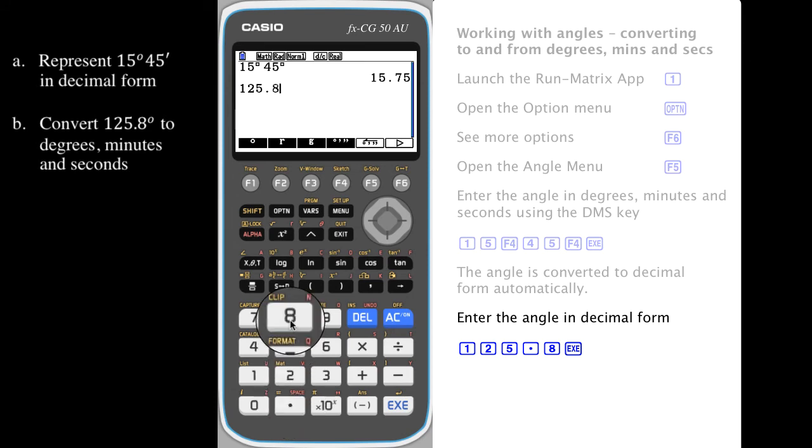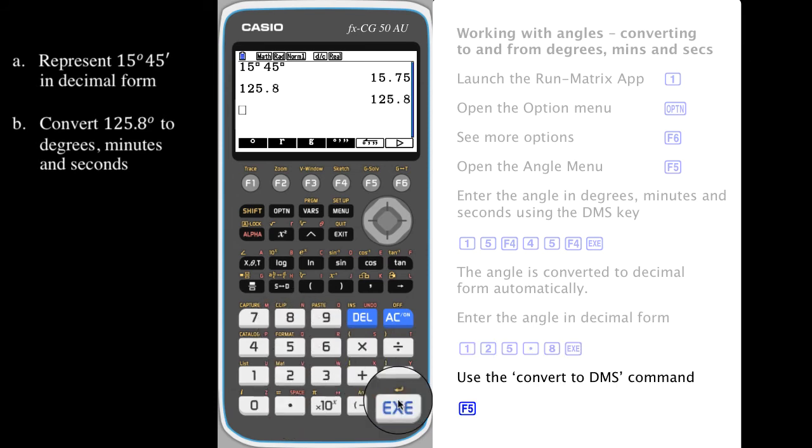To convert an angle from decimal form into degrees, minutes, and seconds, enter the angle in decimal form. In our case, 125.8 degrees, and now use the convert to DMS command which can be found above F5. This gives 125 degrees 48 minutes.